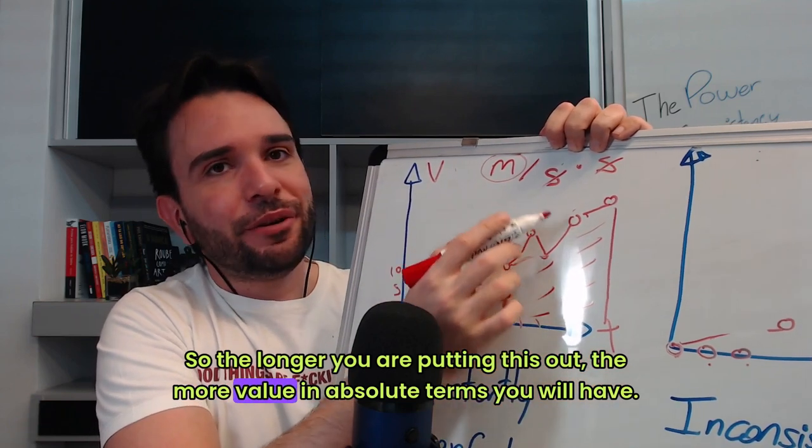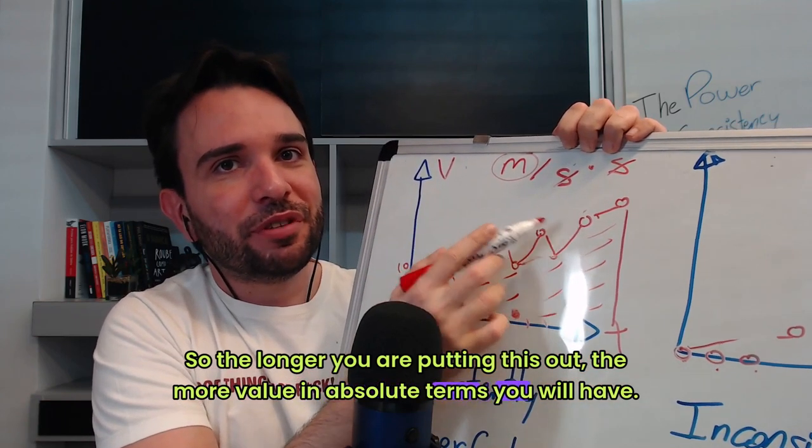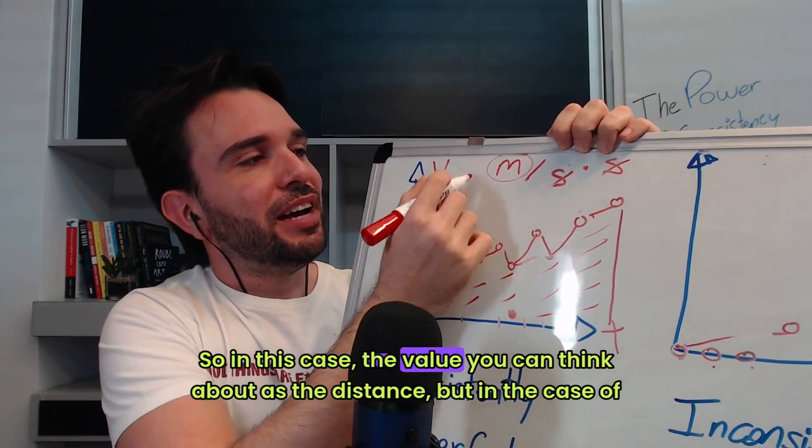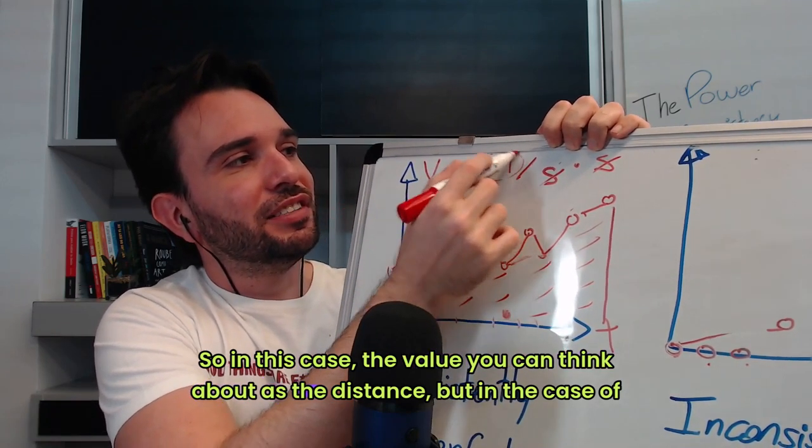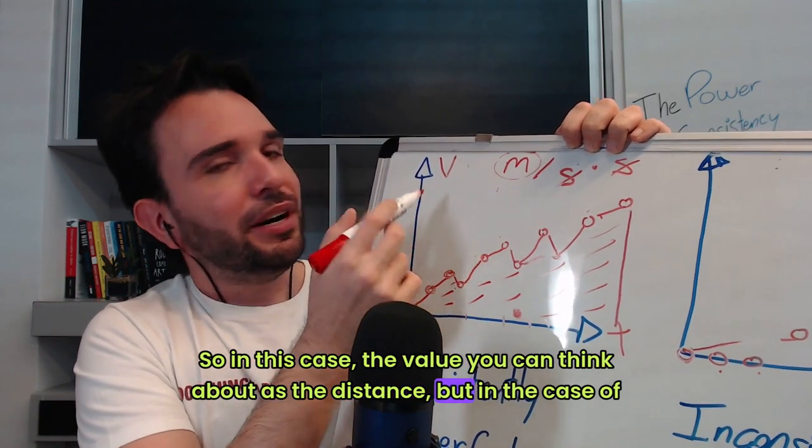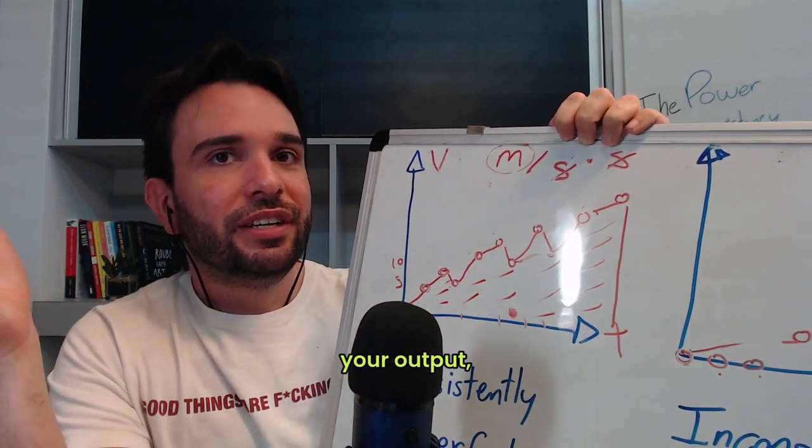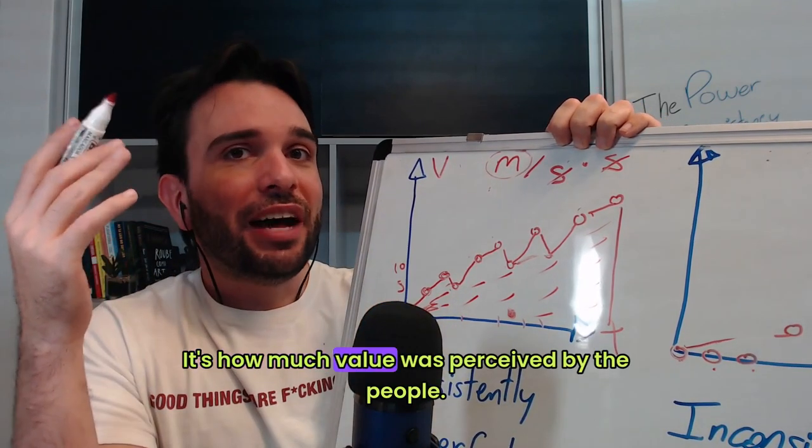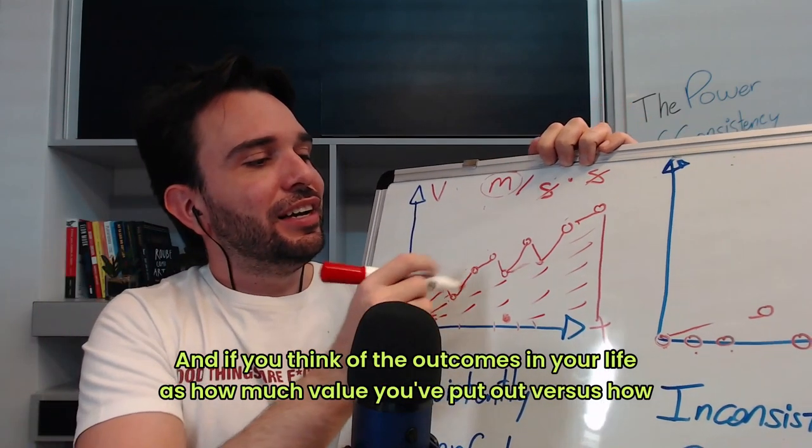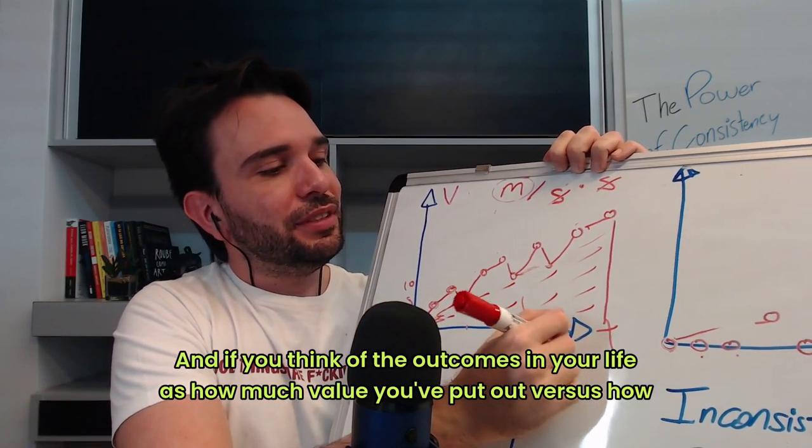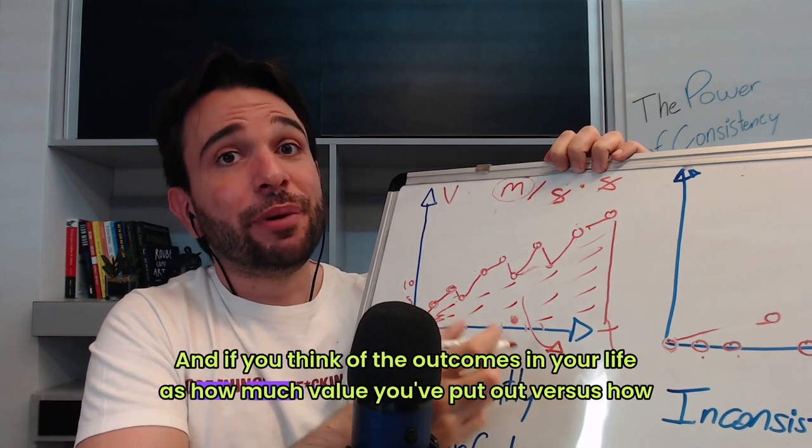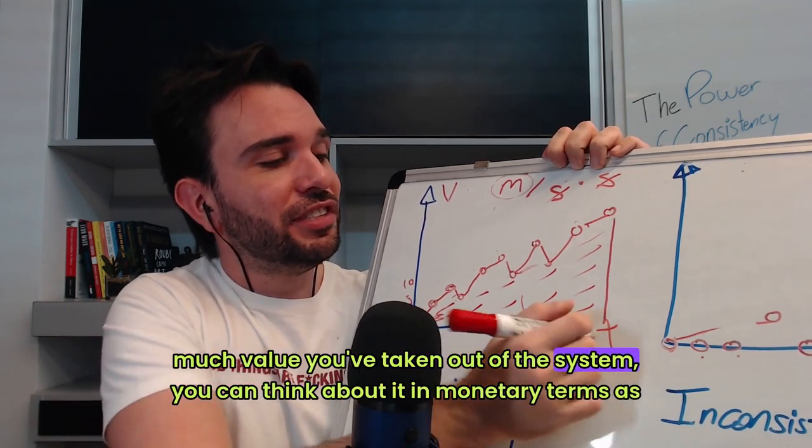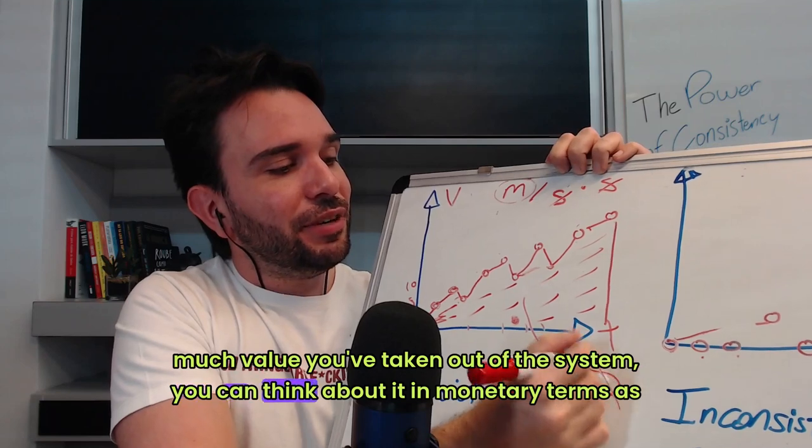So in this case, the value you can think about as the distance, but in the case of your output, it's how much value was perceived by the people. And if you think of the outcomes in your life as how much value you've put out versus how much value you've taken out of the system, you can think about it in monetary terms as well.